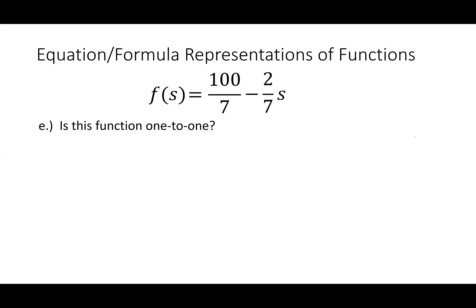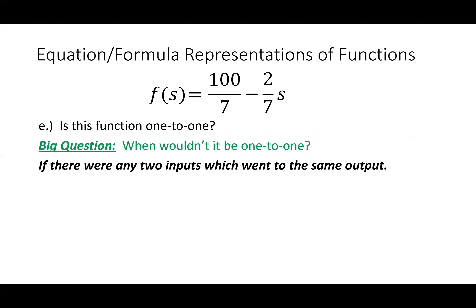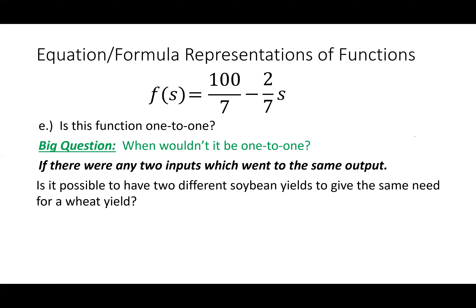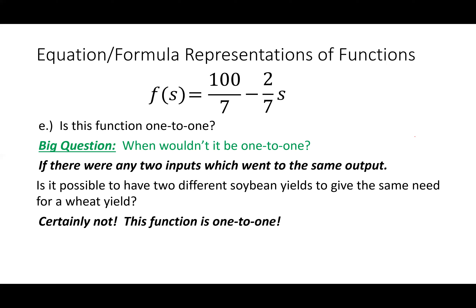Is this function one-to-one? The real question is: when wouldn't it be? It wouldn't be one-to-one if two different inputs mapped to the same output — if two different soybean yields gave the same wheat yield. Certainly not; this function is absolutely one-to-one. Notice that this function is actually just a linear function — 100/7 is the y-intercept and −2/7 represents the slope. A linear function is absolutely going to be one-to-one, and we'll see this is easy to identify when we check graphs.